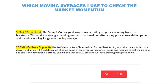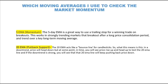To check market momentum, I use 5 EMA and 20 EMA. The 5 EMA can be used as a trailing stop loss if you are in a long or short trade. The 20 EMA acts like a pullback support and a bounce line for candlesticks. For example, in a downtrend, the price will rise up to test the 20 MA line, and if the downtrend is strong, the 20 MA will push the price back down.